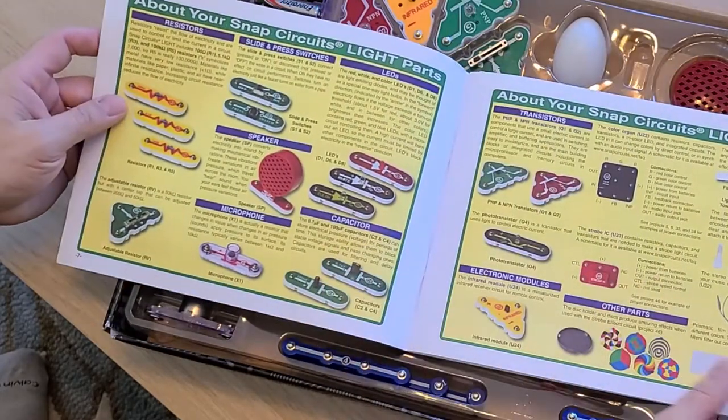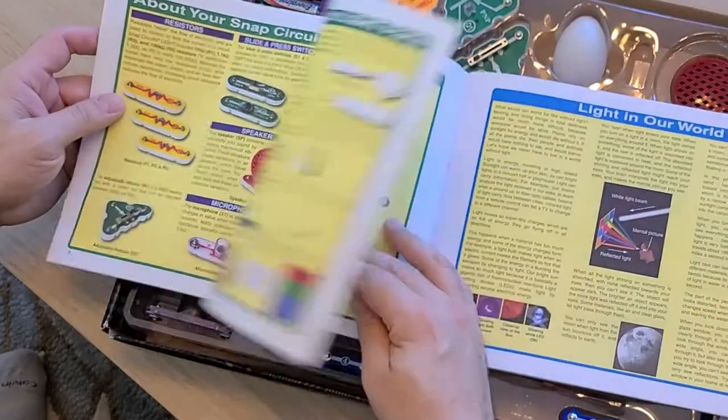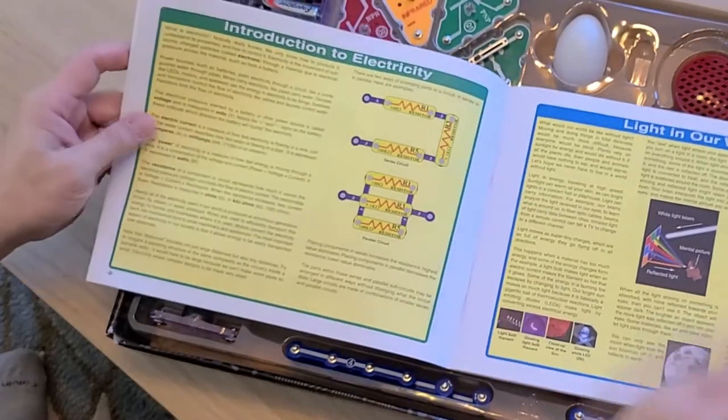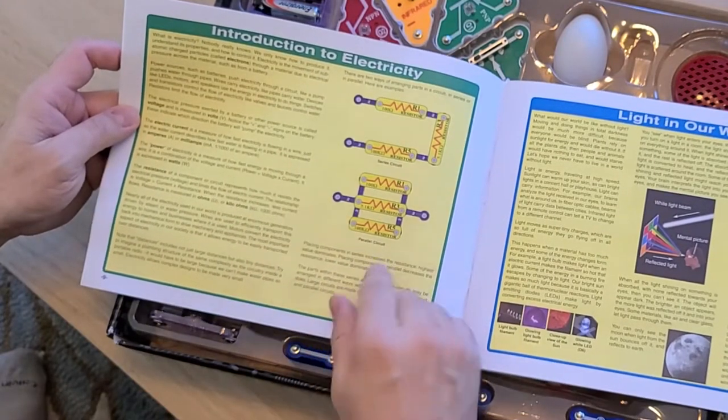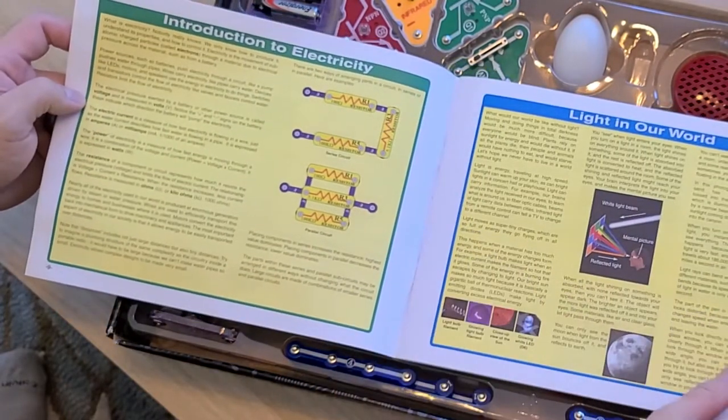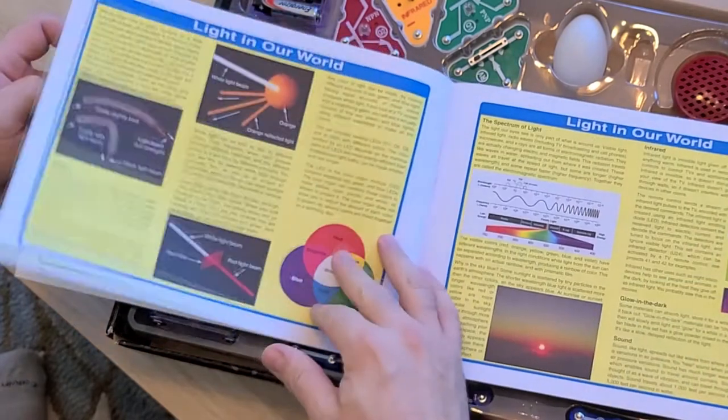It tells you about the circuits that are in here, how you can combine them from other kits if you have other Snap Circuits. They all work together. And this introduction to electricity is one of the best small short descriptions of electricity I've ever seen. I teach a course on electricity and this is great.